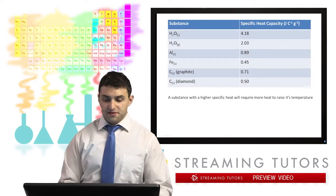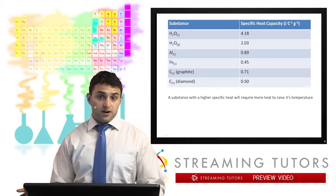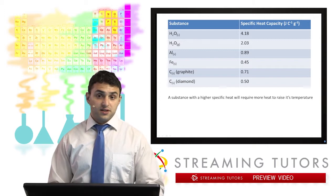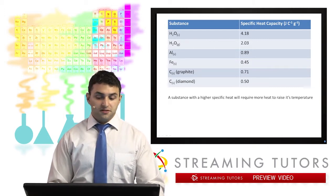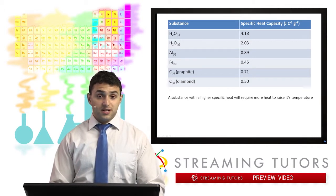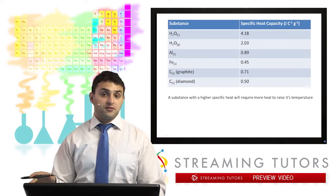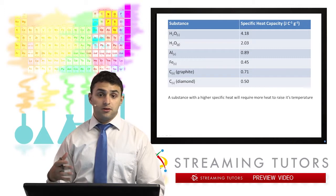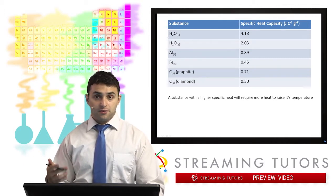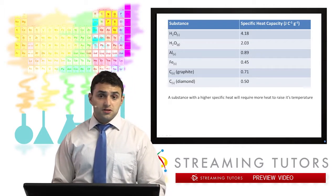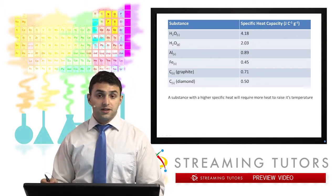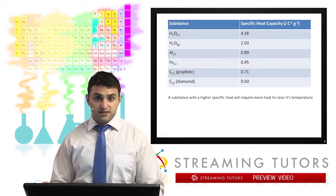Here's a table of some specific heat capacities. You'll see that water actually has a very high specific heat capacity, and that's why it takes a lot of energy to boil water. Metals have a relatively low specific heat capacity — that's why metals get hot so easily, and why the pan that you're boiling your water in will sometimes be hotter than the water itself. A lower heat capacity means less energy is required to heat it up.